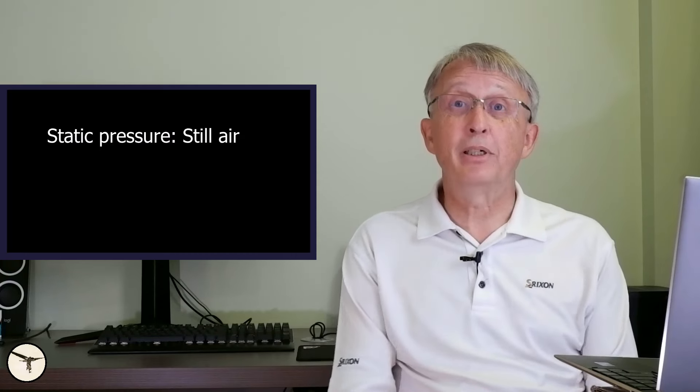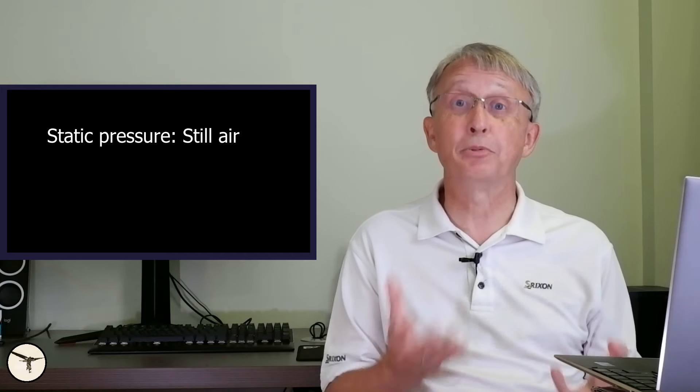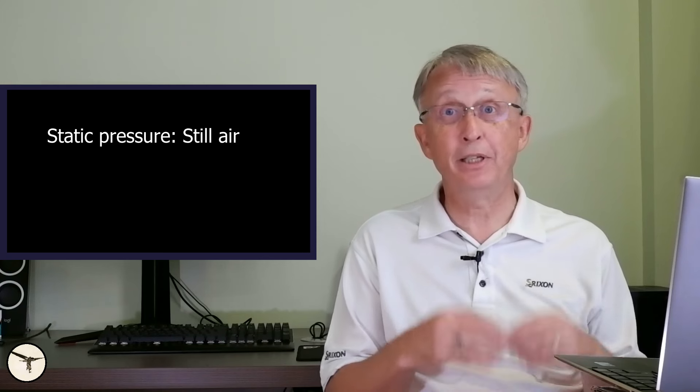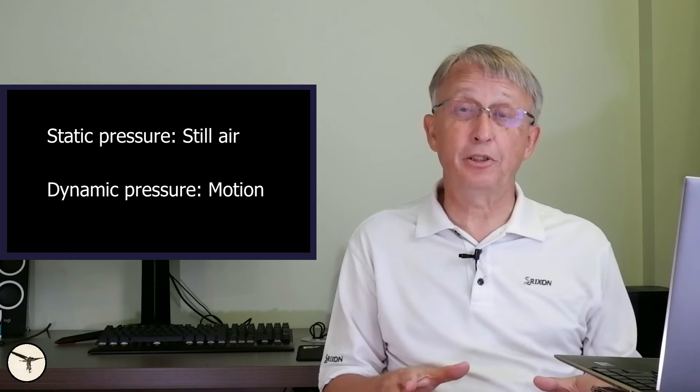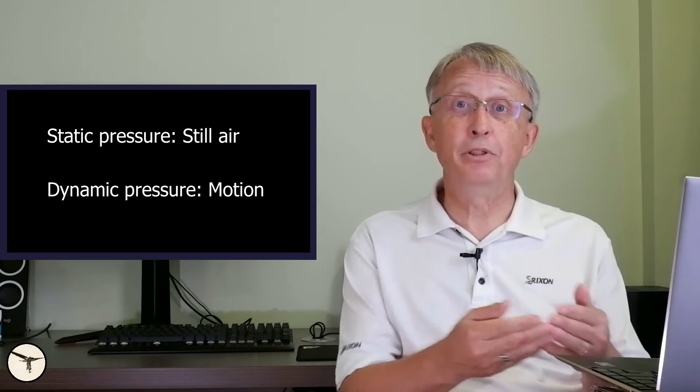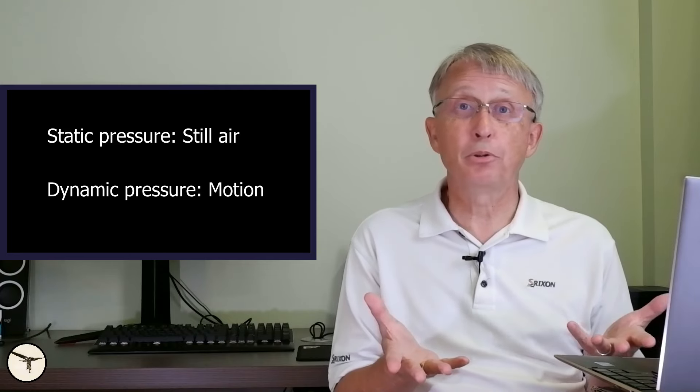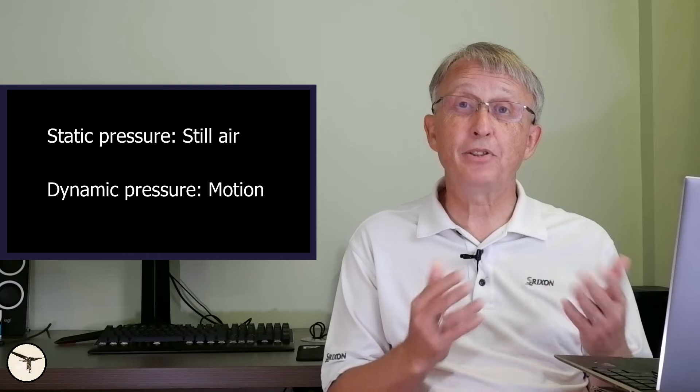Static pressure is the pressure of still air. So that's the atmospheric pressure. And you can measure it with a barometer, and altimeters in aircraft are in fact barometers showing the pressure as an altitude. The dynamic pressure is a fluid in motion, either flowing through a hose or air flowing over a wing.